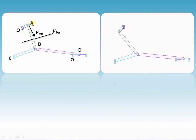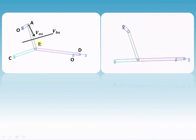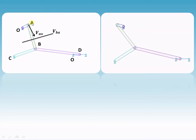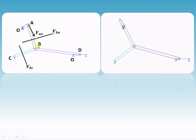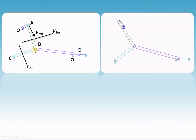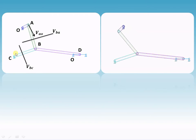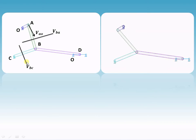The velocity of B with respect to A — since neither A nor B is fixed, we can say B with respect to A or A with respect to B — and it is perpendicular to the link because it is an oscillating link. Similarly, velocity of B with respect to C: since C is the fixed point, we must take velocity of B with respect to C. This is also an oscillating link, so velocity will be perpendicular to this link.